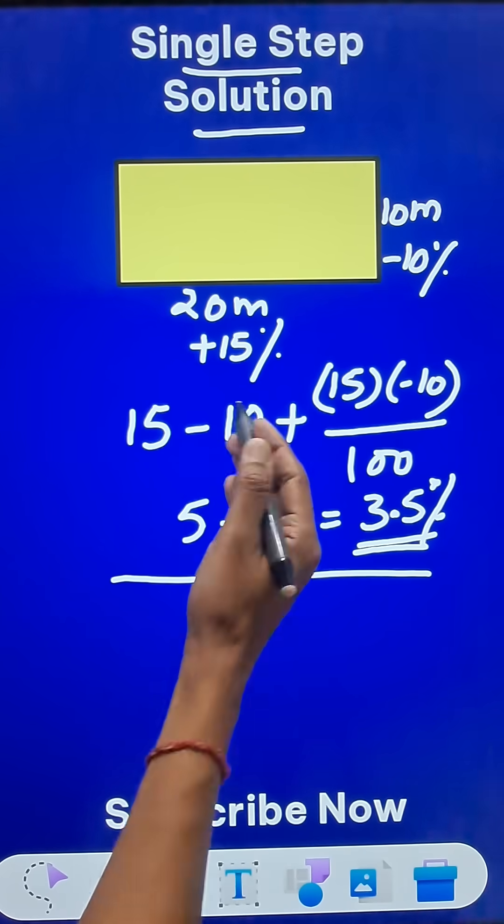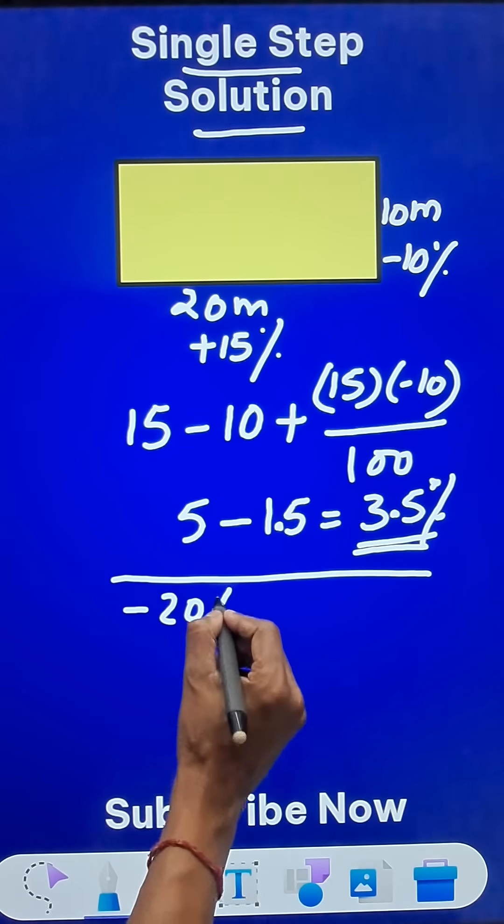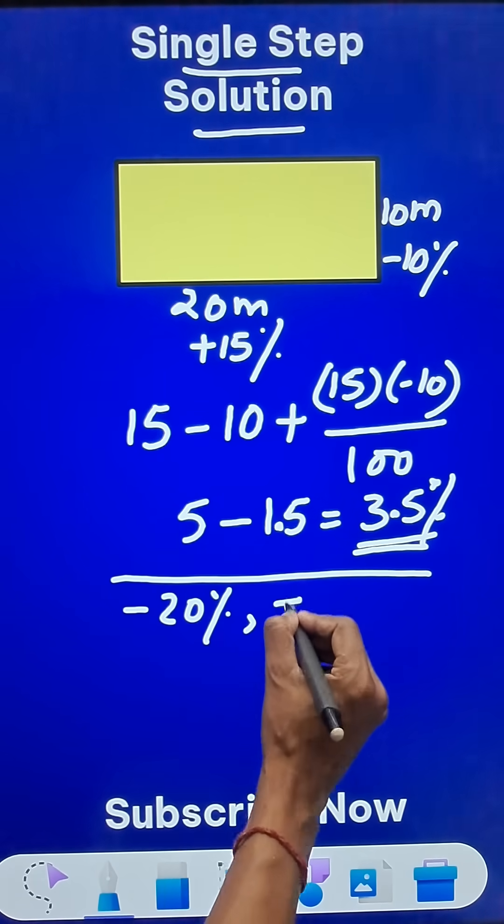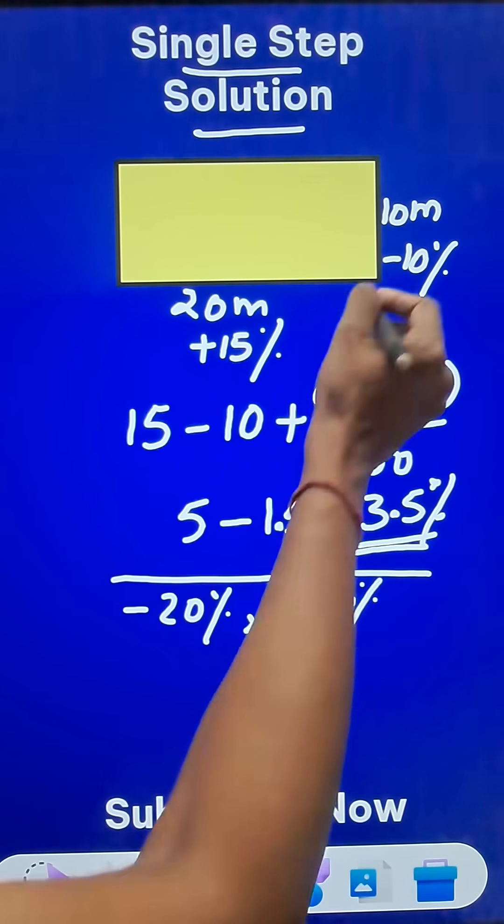Likewise suppose we have another case where one of the dimensions is reducing by 20% and the other dimension is increasing by 30%. So what will be the change in the area now?